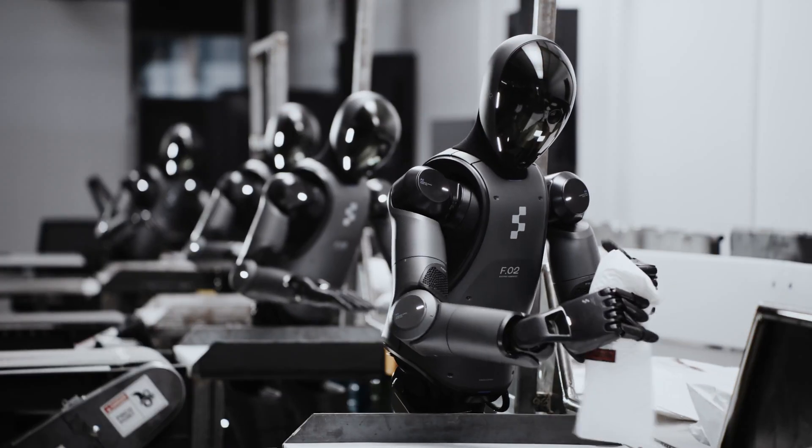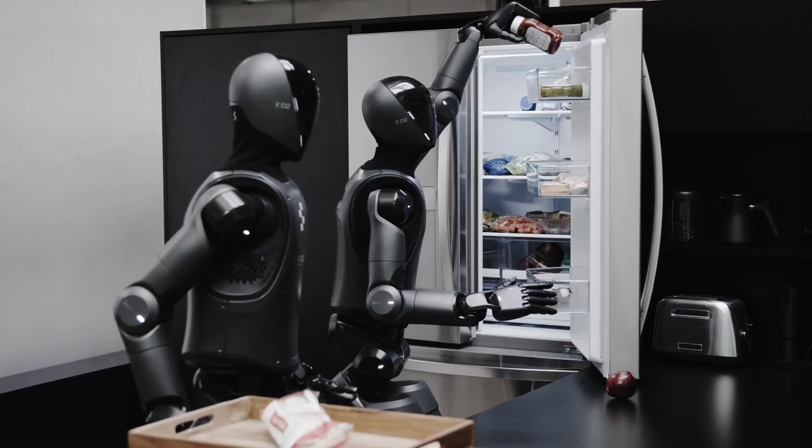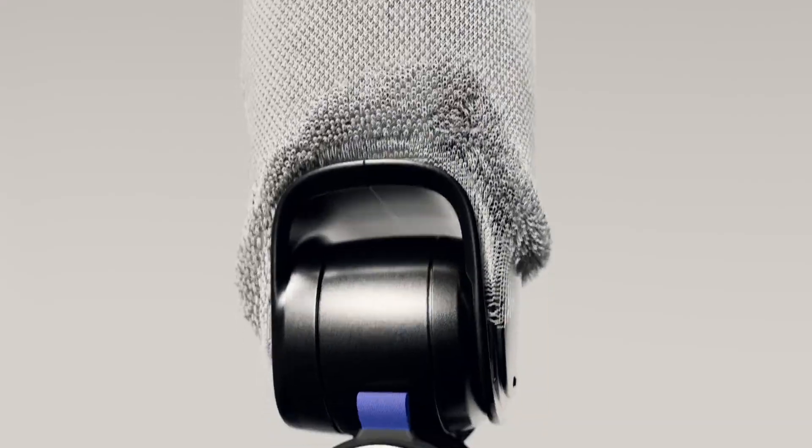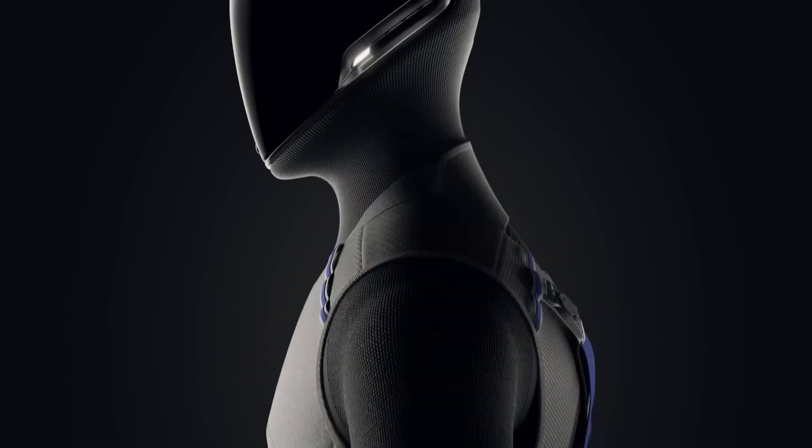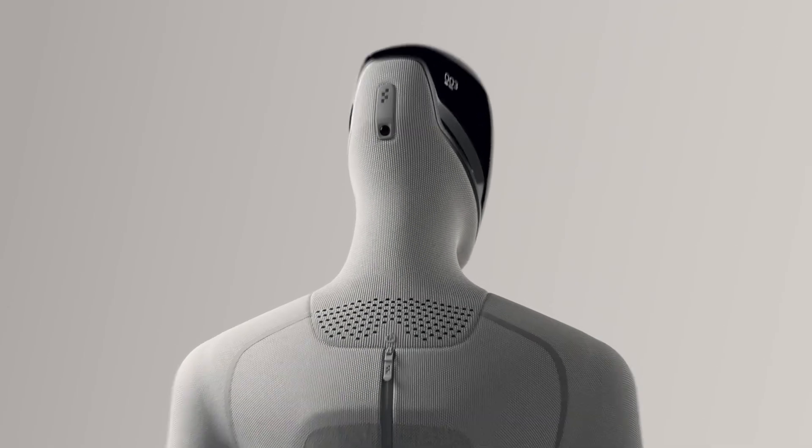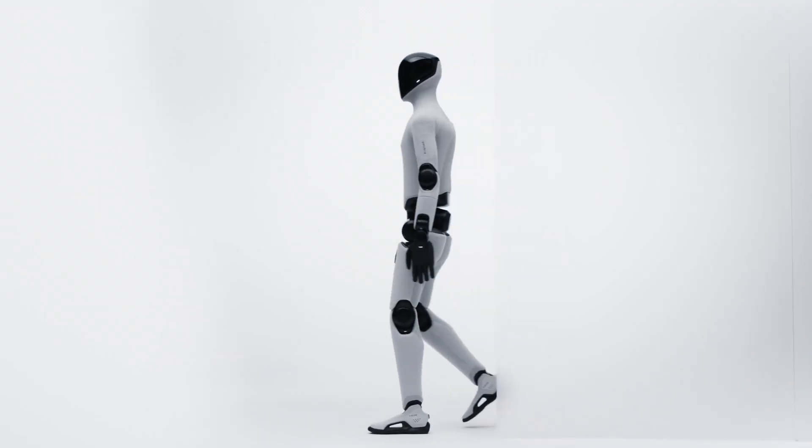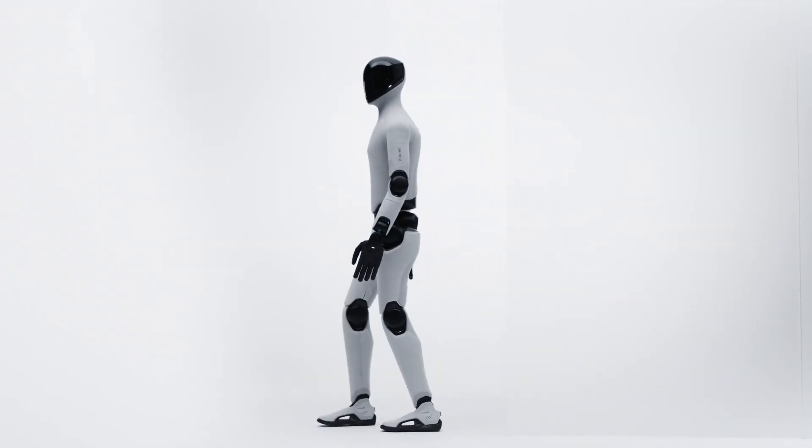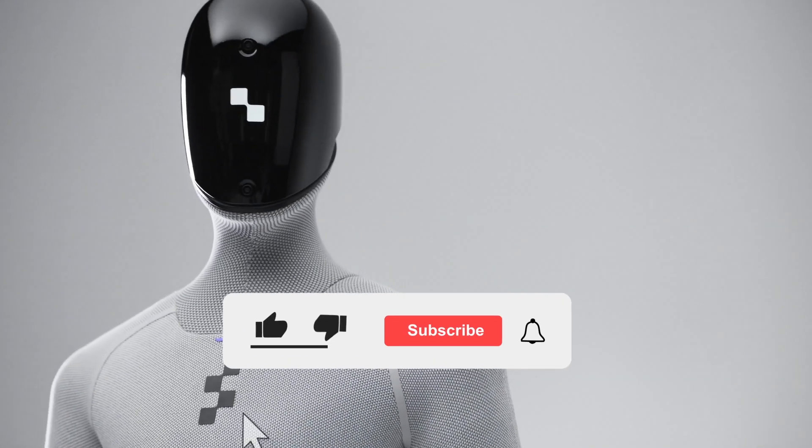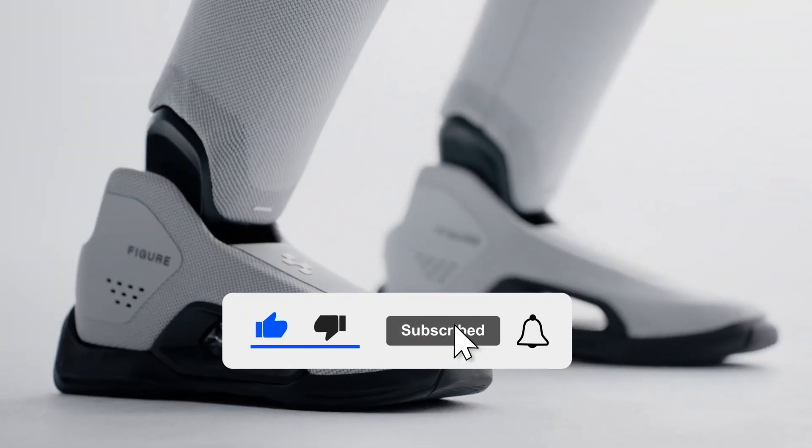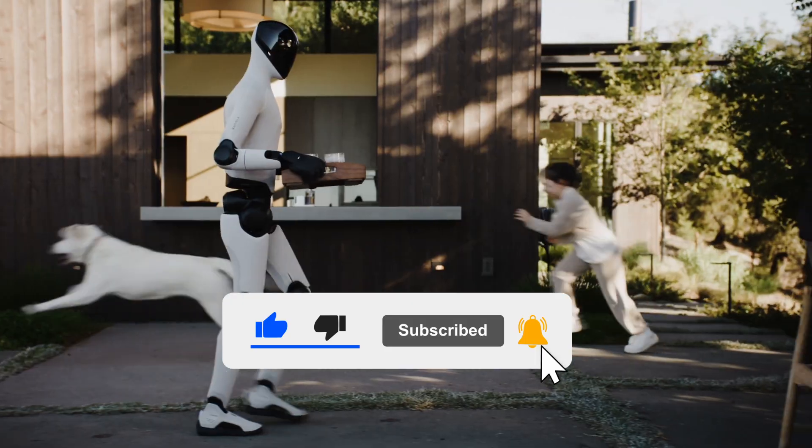And now, fleets can actually look like fleets. Companies can brand their robots, add uniforms, tougher fabrics, or color-coded side screens for easy identification. For the first time, a humanoid doesn't look like a lab prototype, it looks like a product built for deployment. This is it for now. If you're into where humanoids are heading next, make sure to hit subscribe, drop a like, and I'll catch you in the next one.